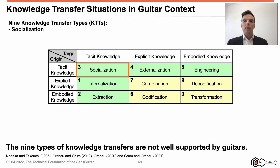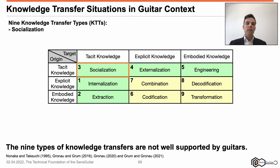Socialization: knowledge carrier-bound tacit knowledge is transferred among knowledge carriers through interactive data and information exchange. For example, two persons are speaking about how to modify an instrument's sound. Here, each person functions as both origin and target. Because of their interaction, knowledge is integrated with their individual knowledge bases. Since traditional guitars do not support conversation, dialogues, human interactions, etc., socializations are not supported by guitars yet.